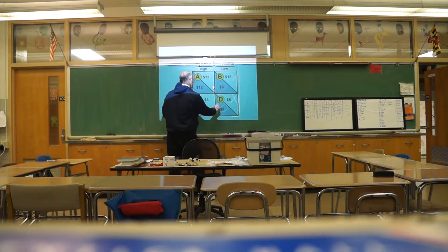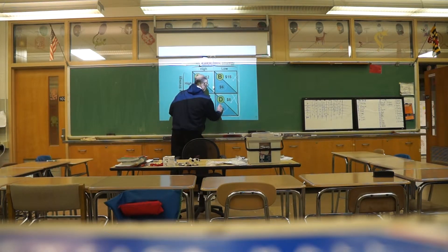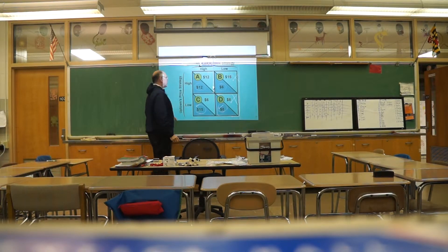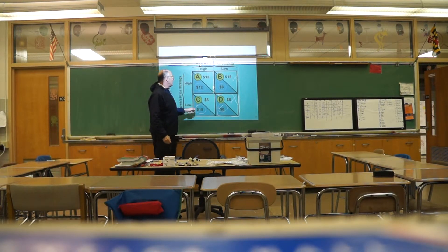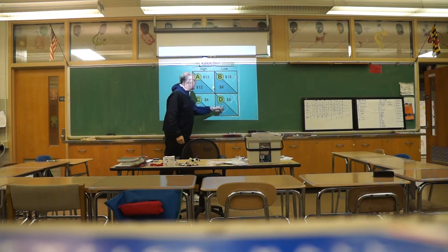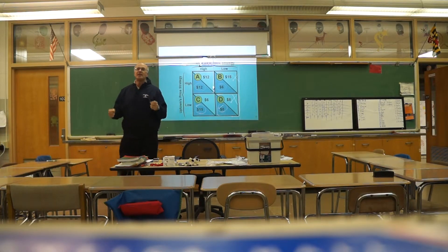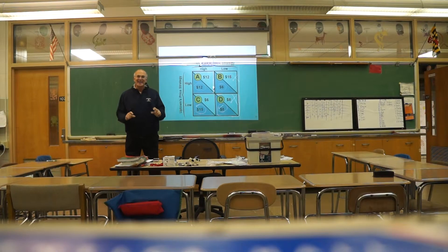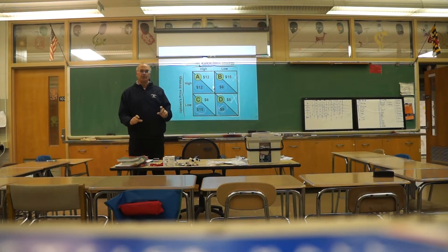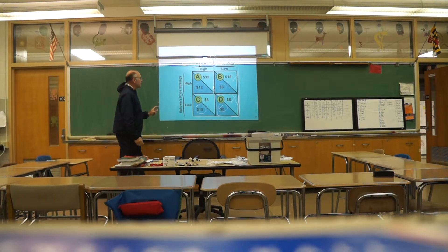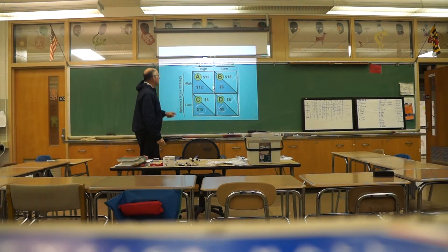Now if Rare Air goes low and Upton goes high, Upton makes 6. If they both go low, Upton makes 8 — so I get a check there too. Notice that no matter what Rare Air does, Upton should go low. That is the dominant strategy — the strategy you will use no matter what your opponent does.